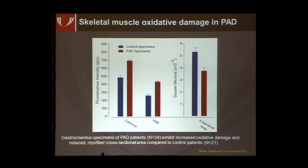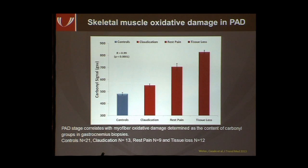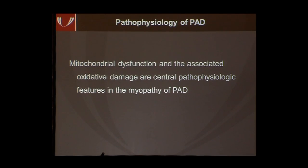Myofibers with high oxidative damage also demonstrate a decrease in their cross-sectional area compared to controls. We just published that damage accumulates as disease progresses: damage levels are lowest in controls, a little higher in claudicants, higher in patients with rest pain, and highest in people with tissue loss. As ischemia persists, damage accumulates progressively, affecting every structure in the ischemic extremity — including muscles, but also skin, nerves, subcutaneous tissues, sweat glands, and hair follicles — eventually manifesting as claudication, tissue loss, and gangrene. So mitochondrial dysfunction and the associated oxidative damage are central pathophysiologic features of this myopathy.